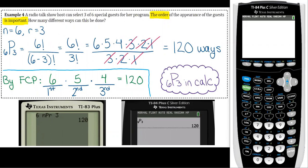So from example 4, this one was a permutation and we said that one way you could do it was to go to NPR in your calculator. So here's how you do that.